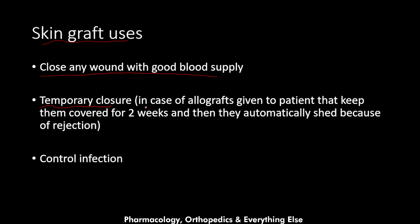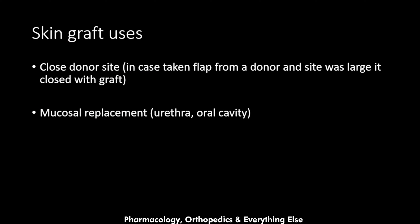In the case of allografts, they are given to the patient to keep the area covered for two weeks and then they automatically shed due to rejection. Allografts are taken from another person and given to the patient just to temporarily allow the skin to grow. Skin grafts are also used to control infection, to close donor sites when a large flap has been taken, and in mucosal replacement for the urethra and the oral cavity.